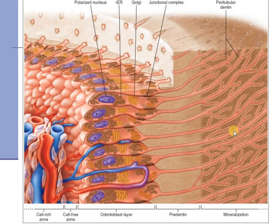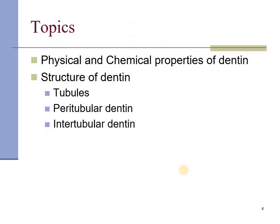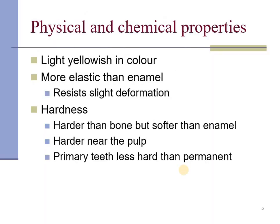Before the mineralized dentine, there is a small zone of pre-dentine which is predominantly made up of type 1 collagen. Let's look at the physical and chemical properties of dentine.